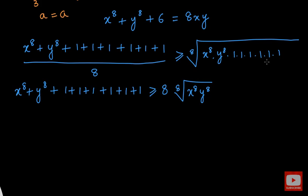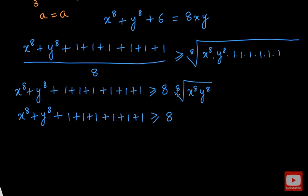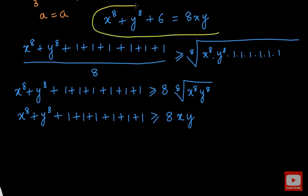We don't have to worry about the ones because the product of 6 ones is just 1. So we have x to the power 8 plus y to the power 8 plus 6 is greater than or equal to 8 times the 8th root of x to the power 8 times y to the power 8, which simplifies to 8xy. But in our given equation, x to the power 8 plus y to the power 8 plus 6 is given as equal to 8xy — not greater than or equal to.